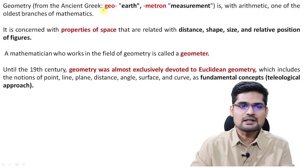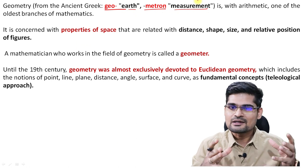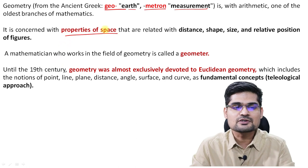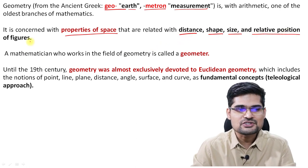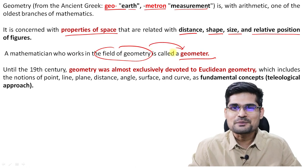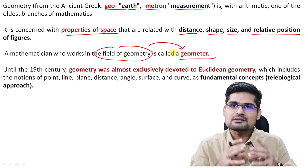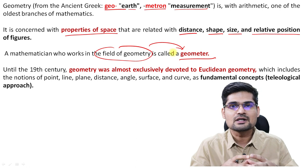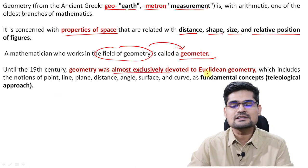Let's understand a little about geometry. The ancient Greek word 'geo' means earth and 'metron' means measurement, so geometry originally concerned the measurement of the earth. In the modern age, geometry became part of mathematics and arithmetic, used for discussion on properties of space — related to distance, shape, size, and relative position of figures. A mathematician who works in the field of geometry is called a geometer. Until the 19th century, geometry was almost exclusively devoted to Euclidean geometry, with fundamental concepts of point, line, plane, distance, angle, surface, and curve.